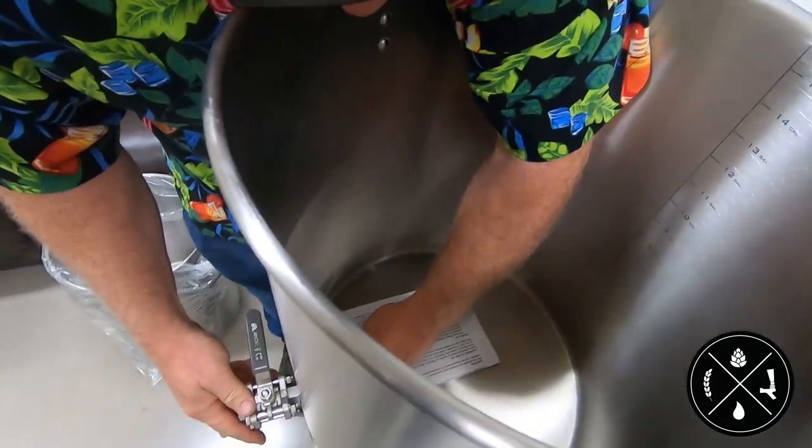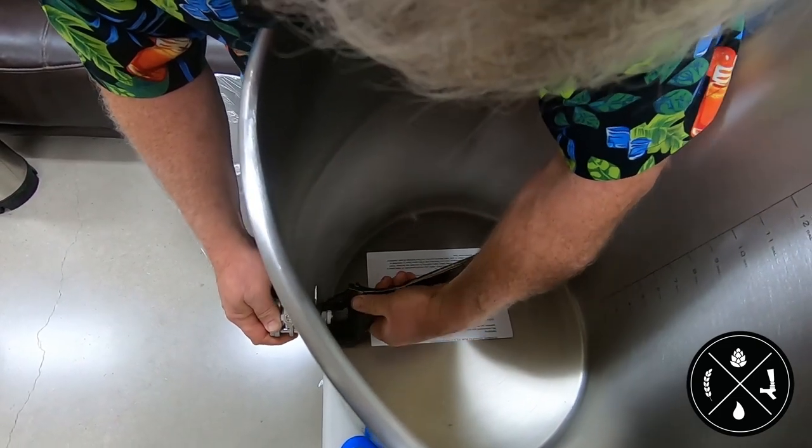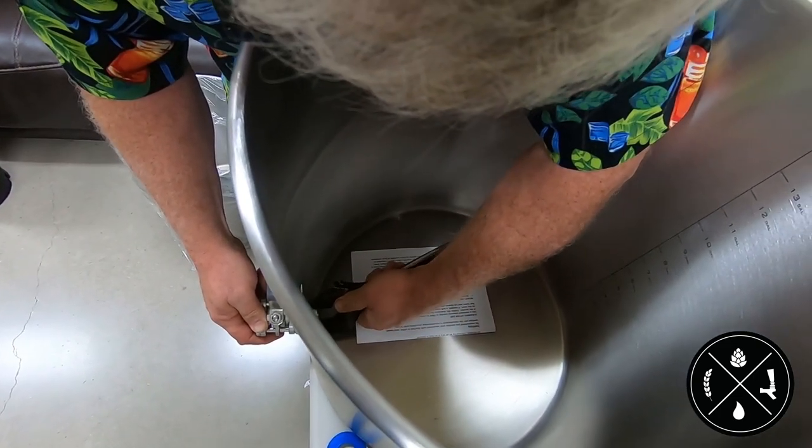While still holding the ball valve in place, you can tighten the lock nut until the silicone o-ring is compressed and the ball valve feels secured on the outside of the kettle.